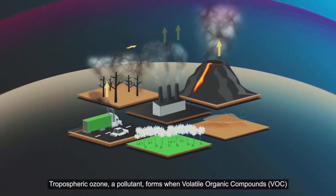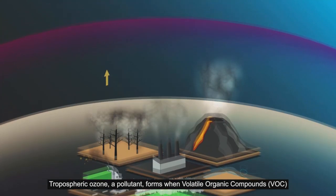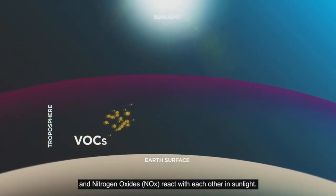Tropospheric ozone, a pollutant, forms when volatile organic compounds and nitrogen oxides react with each other in sunlight.